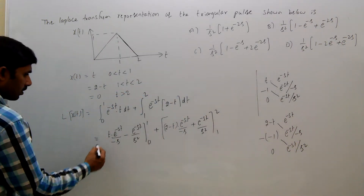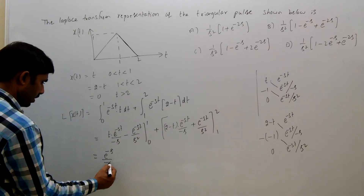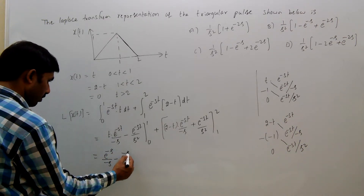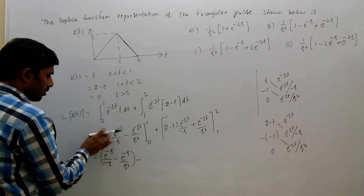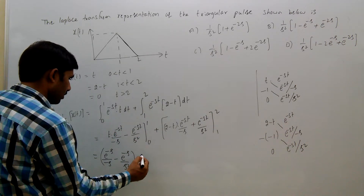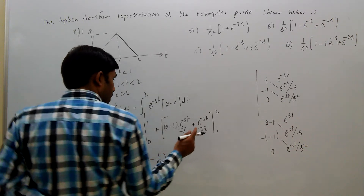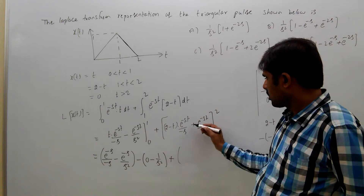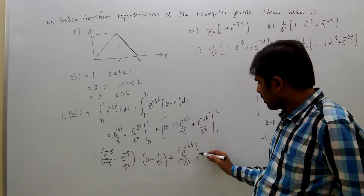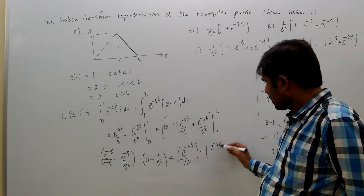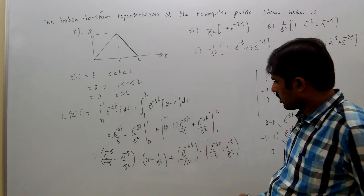Substituting limits: at T equal to 1, we get e power minus S by S square. The T term at T equal to 0 becomes 0. Then minus 1 by S square. For the upper limit T equal to 2: 2 minus 2 equals 0, giving e power minus 2S by S square. At T equal to 1, we get e power minus S by minus S, plus e power minus S by S square.